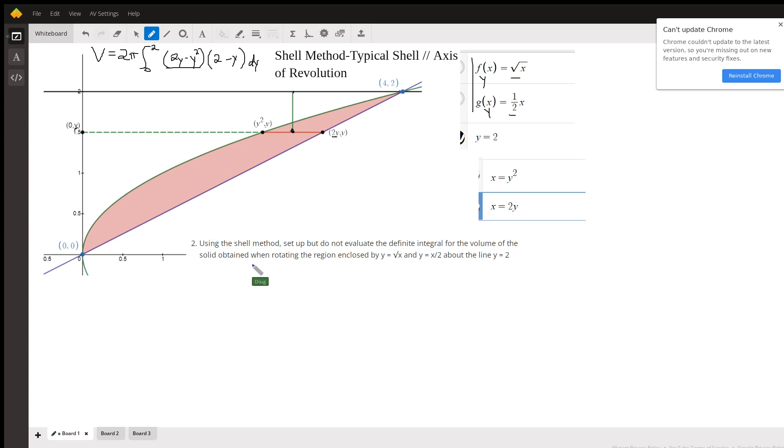We're trying to solve this problem right here. We're going to rotate this red region about the axis of revolution, the line y equals 2. This is the line y equals 2.